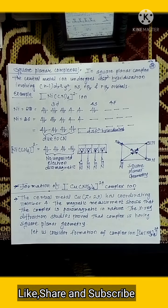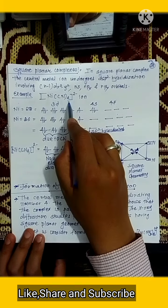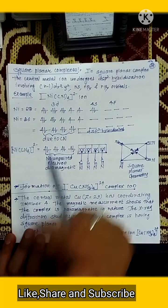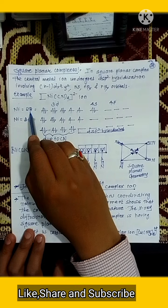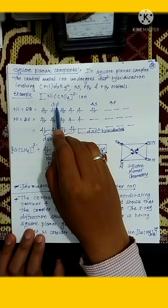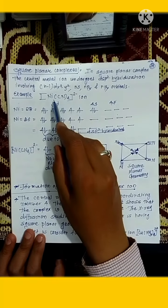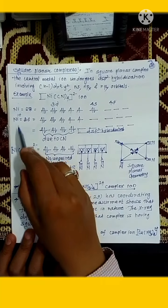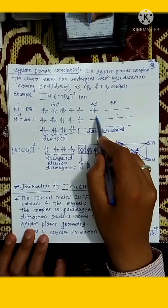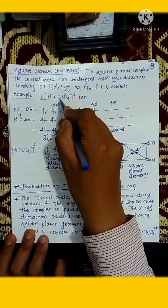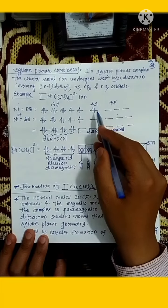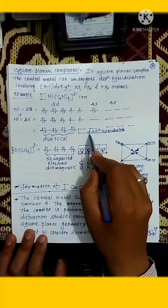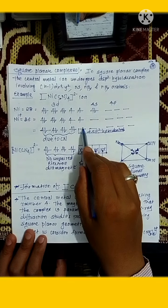Now we are going to see square planar complexes. The next example is Ni(CN)4 2-. Ni has atomic number 28, and its electronic configuration is 3d8 4s2. In this complex, Ni is present in the 2+ oxidation state, so the electronic configuration is 3d8 4s0. Since cyanide is a strong ligand, it forces the central metal atom to use inner shell orbitals in hybridization, and that is why dsp2 hybridization takes place.